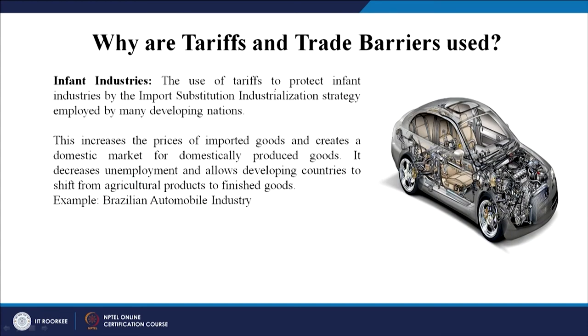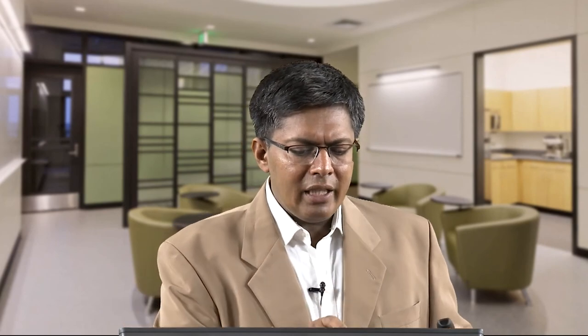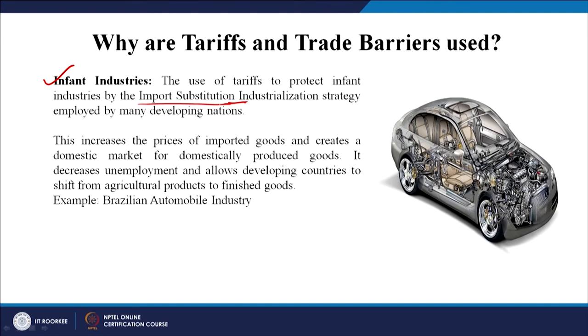Infant industries are also saved using tariffs through the import substitution industrialization strategy. Instead of producing something locally if it is cheaper outside, we would substitute it through imports. This increases the price of imported goods and creates a domestic market for domestically produced goods, decreasing unemployment and allowing developing countries to shift toward manufacturing. This import substitution method has been largely criticized though — for example, the Brazilian automobile industry used this technique to help save the infant industry.